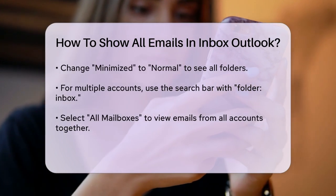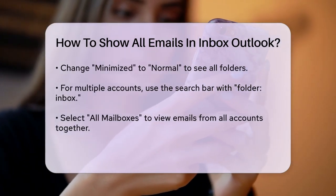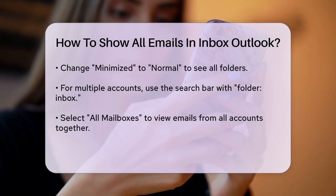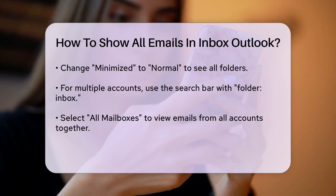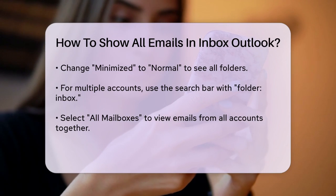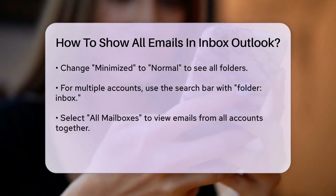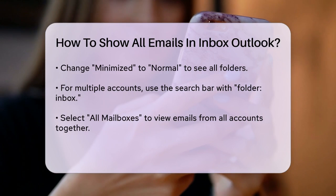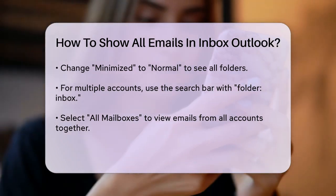If you have multiple email accounts in Outlook, you can also view all emails from these accounts simultaneously. To do this, click on the Inbox of one of your accounts, then use the search bar at the top to enter Folder Inbox. Next, click on the downward arrow next to Current Mailbox and select All Mailboxes. This will show you all the emails from all your inbox accounts in one view.